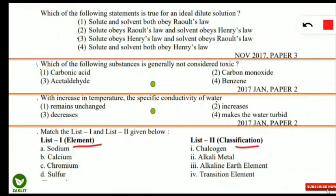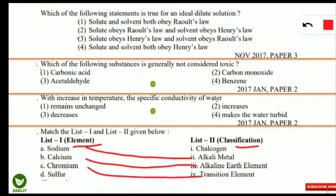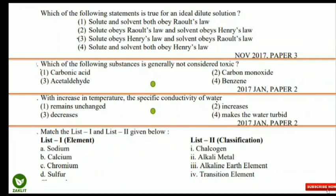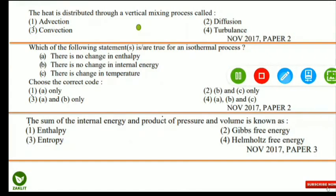The next question is a match-the-following on elements and their classification. Sodium is an alkali metal, calcium is an alkaline earth element, chromium is a transition element — very important and frequently asked — and sulfur is called a chalcogen, the group in which oxygen also belongs.